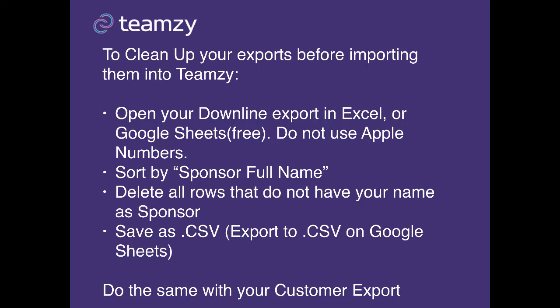We're going to sort our sheet by sponsor full name. This is so we can identify who's personally sponsored by you and then delete all the rows that do not have your name listed as the sponsor. Now save the file as a dot CSV. If you're using Google Sheets, go to file and hit export to CSV.